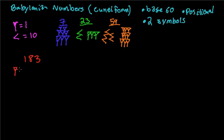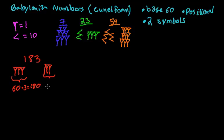For 183, we'll draw 3 of these symbols worth 60 each. So 60 times 3 equals 180. And then we need 3 more ones. Because I leave a space between these groups and don't write them on top of each other, that shows this group represents 60 each, and this group represents 1 each. 1 times 3 equals 3. So 180 plus 3 equals 183.